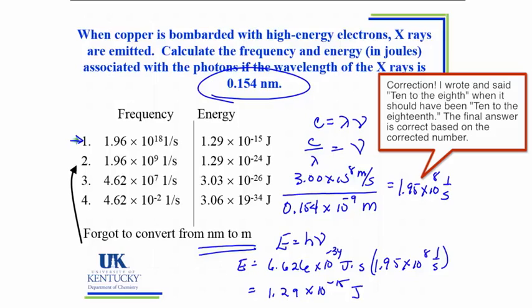So this ends our learning objective number three. We've looked at the connection between wavelength and frequency in our previous learning objective. Now we're seeing the dual nature of light and understanding that each little particle of light that we call a photon has an energy equal to h times nu or h times frequency.